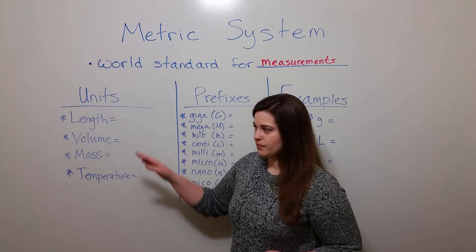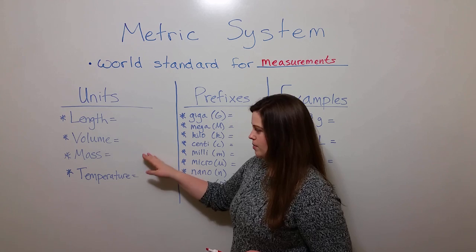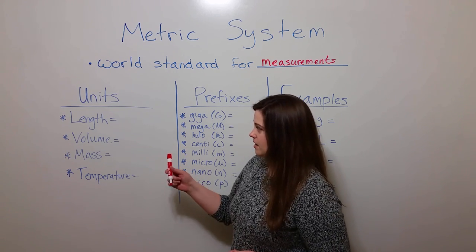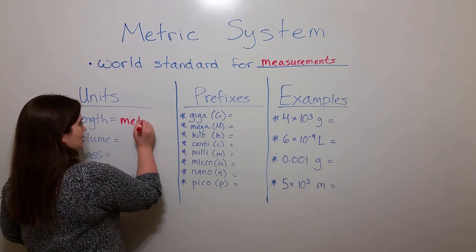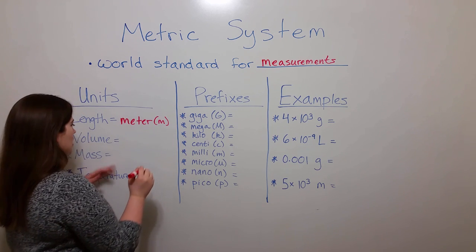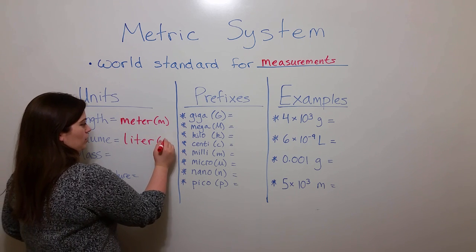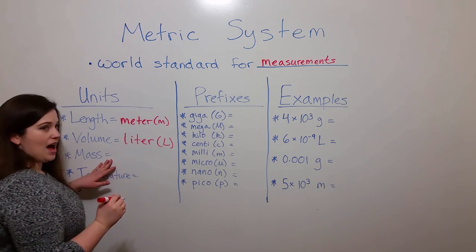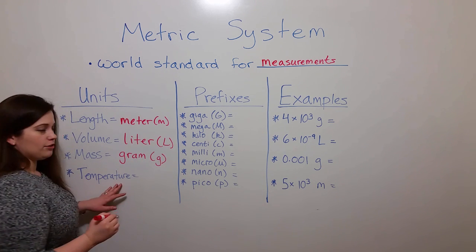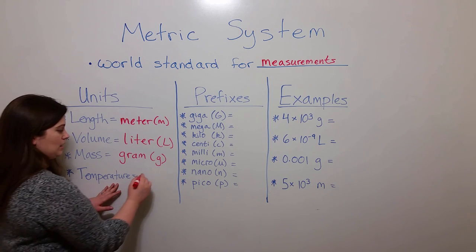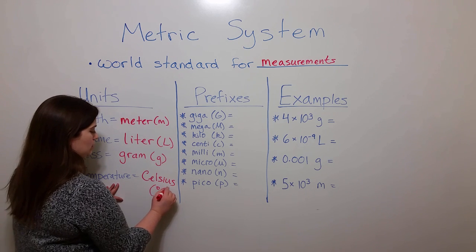The metric system has units for various types of measurement, including length, volume, mass, and temperature. For length, the meter is used, abbreviated with an M. For volume, the liter is used, abbreviated with an L. Mass, it's the gram, abbreviated with a G. And for temperature, degrees Celsius is used, abbreviated as degrees with a C.